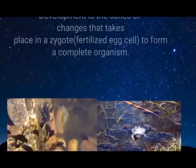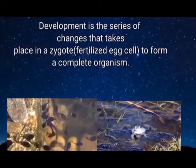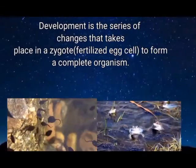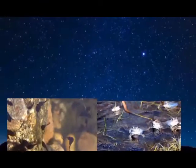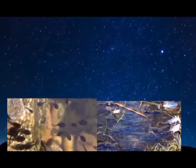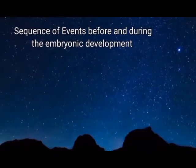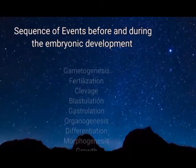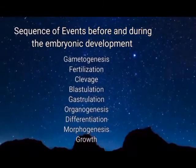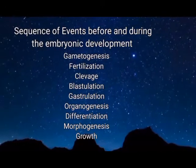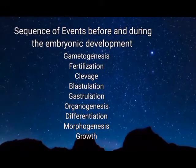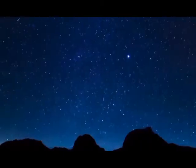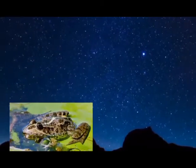Development is the series of changes that takes place in a zygote, which is a fertilized egg, in order to form a complete organism. Embryonic development in all sexually reproducing metazoans begins from a single cell. The sequence of events before and during embryonic development of frog includes gametogenesis, fertilization, cleavage, blastulation, gastrulation, organogenesis, differentiation, morphogenesis, and growth.